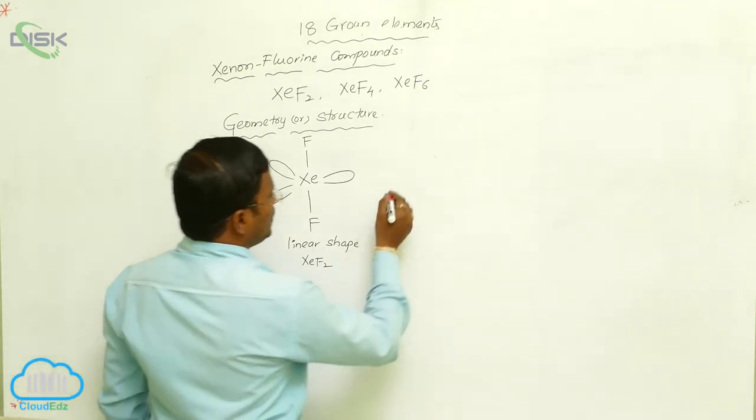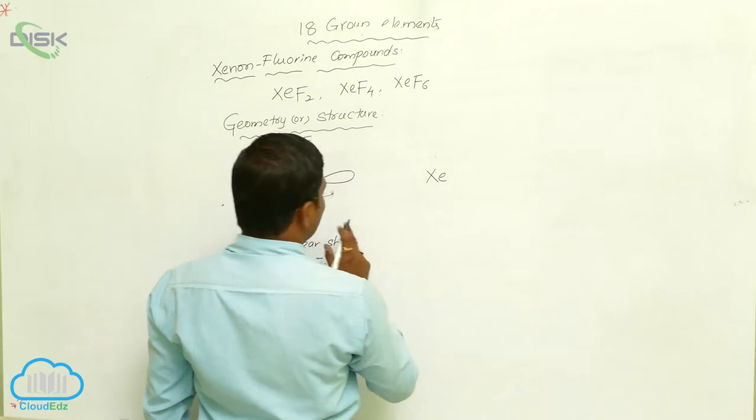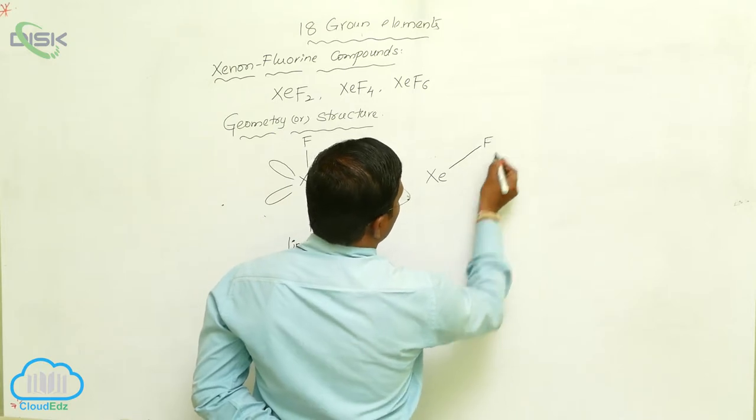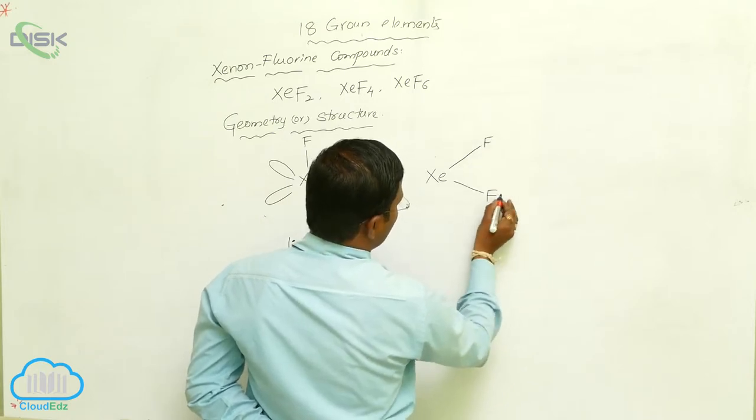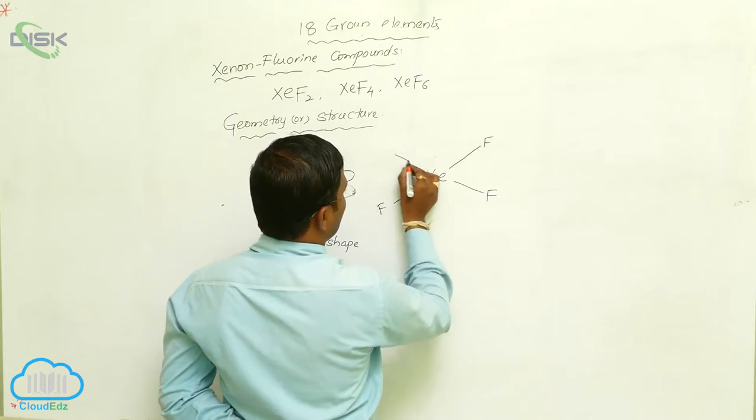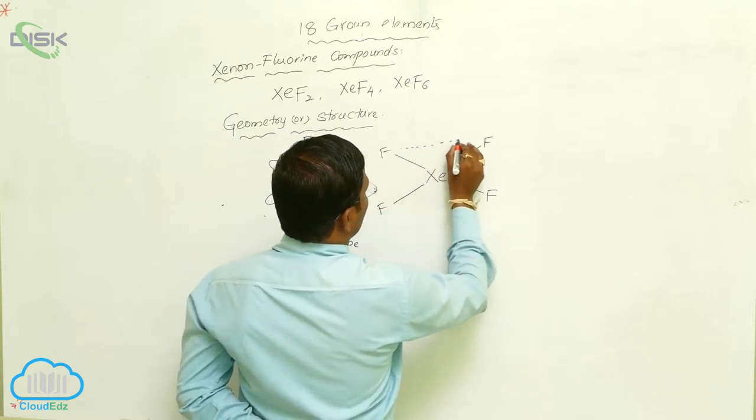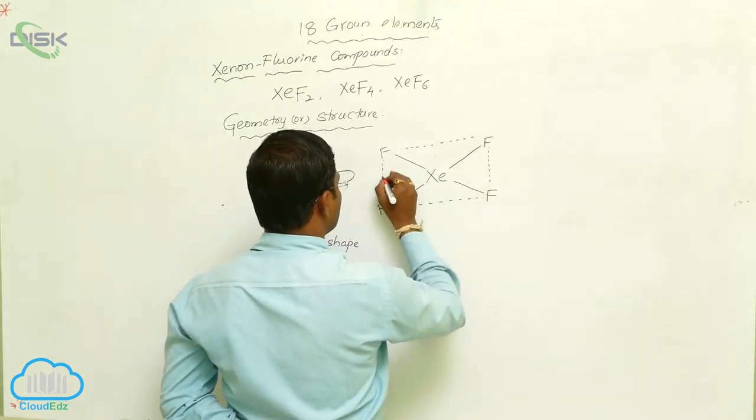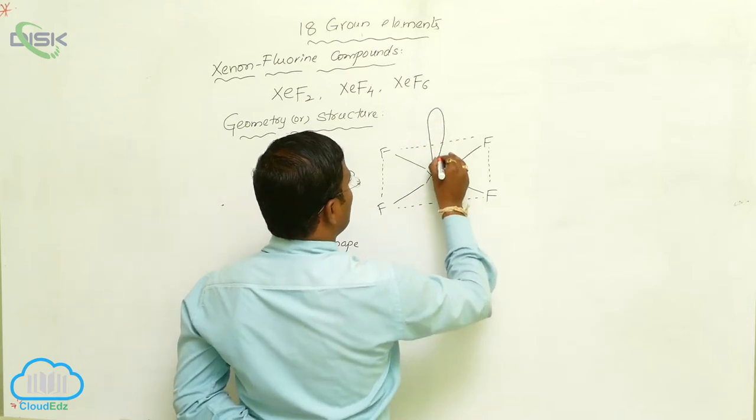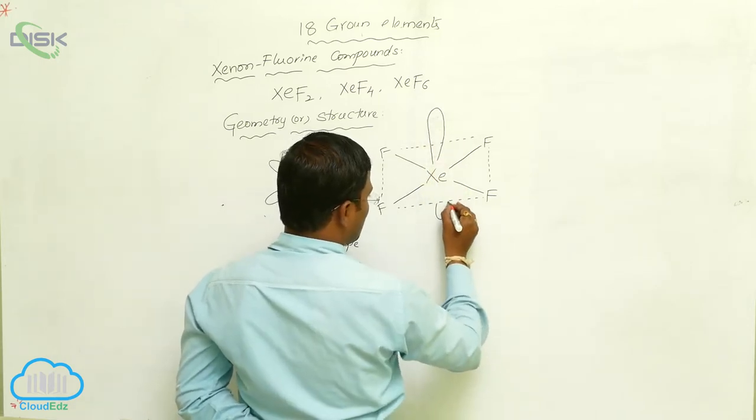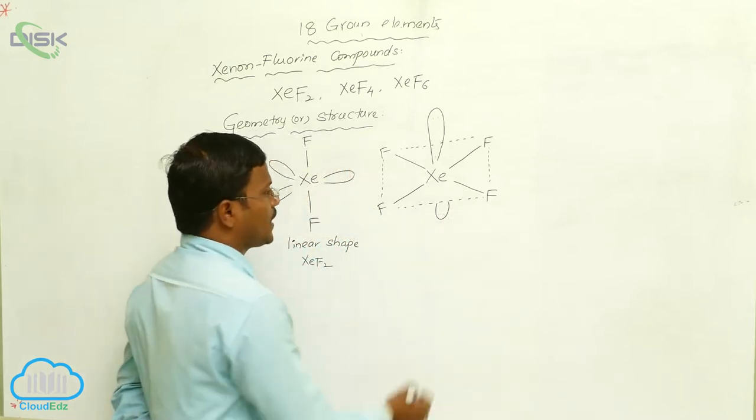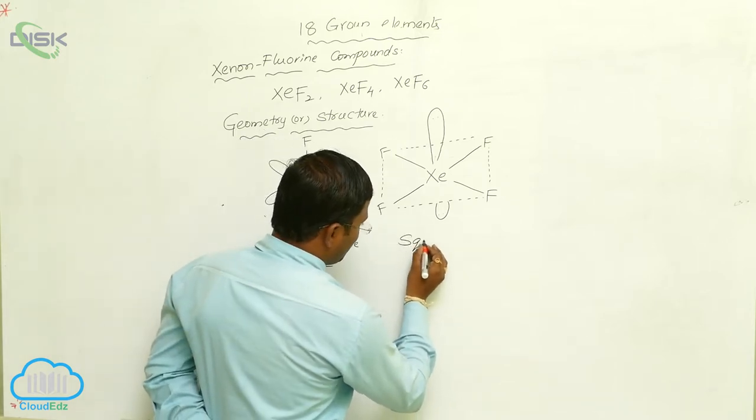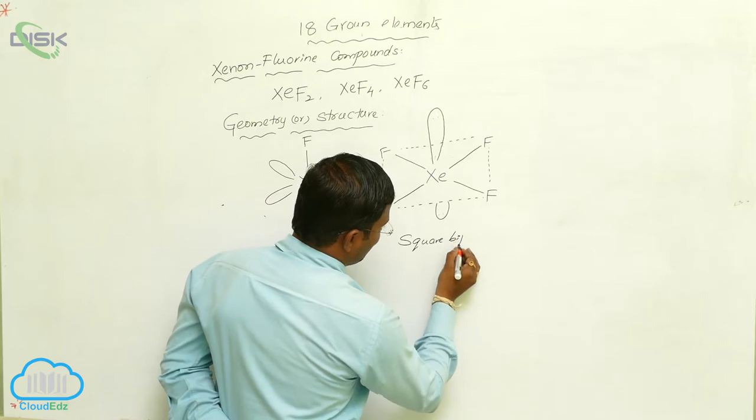Similarly, xenon tetrafluoride, XeF4, will show the geometry as four fluorines, meaning xenon connected with four fluorine atoms and two non-bonding pairs of electrons present here. This bond extends up to xenon and it is square bipyramidal geometry, xenon tetrafluoride.